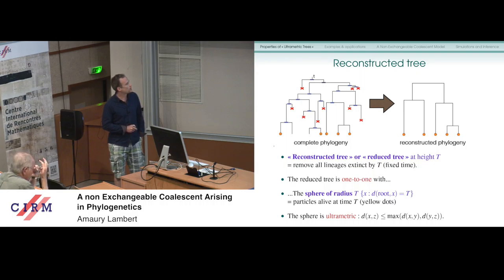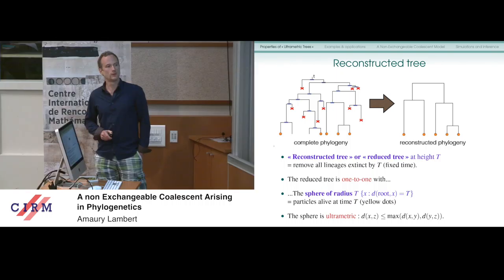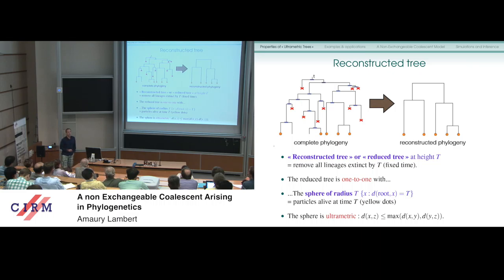The sphere of radius capital T is just the set of points at distance capital T from the root, as Steve showed. So the sphere is ultrametric, in the sense that the distance between two tips is smaller than the maximum of any two pairwise distances. Usually this tree is called an ultrametric tree, but of course it's not the distance on the tree which is ultrametric — only on the sphere.